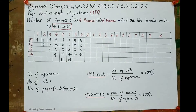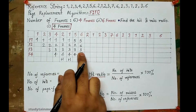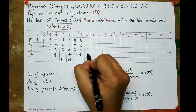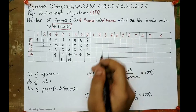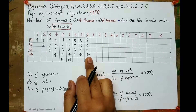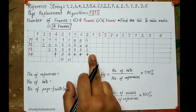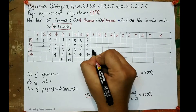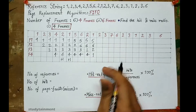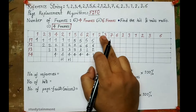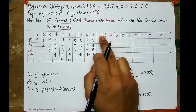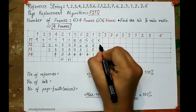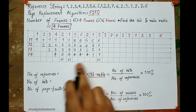Now 2 comes again — we need to replace a page. Among 5, 6, 3, and 4, page 3 is the oldest, so 3 will be replaced with 2. Then 1 comes — 1 is also not present, so it is a page fault. Page 4 is the oldest, so 4 will be replaced with 1. Then 2 comes again and 2 is already present — this is a hit.